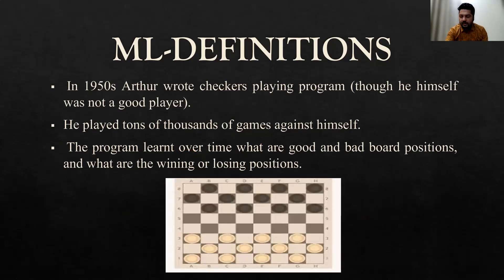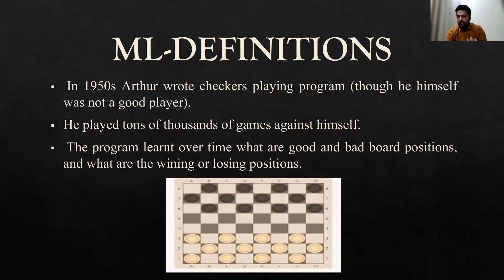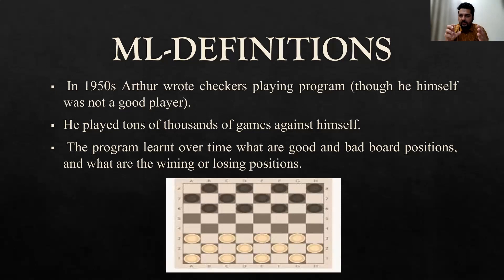There are multiple definitions. The official one is this one, but before that I want to give you one example. In the 1950s, Mr. Arthur, who gave this definition, played a game called checkers. In checkers, you have to move diagonally only. If you jump the opponent, that opponent gives you their checker. The more you collect, the sooner you win. Over time, Mr. Arthur got to know which positions on the board were good and which were bad — winning and losing positions were understood by experimenting and playing again and again.